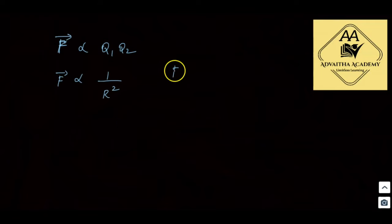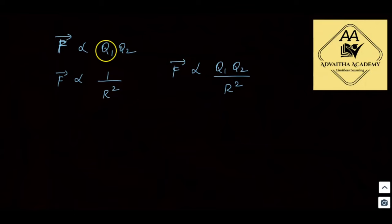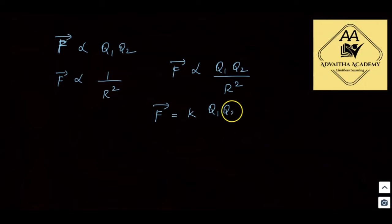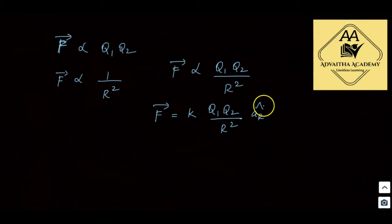Combining both proportionality statements gives F ∝ q1·q2 / r². Introducing the proportionality constant k, the force formula becomes: F-bar = k · q1·q2 / r² · r-cap newtons. Here r-cap is the unit vector in the direction of the line joining the charges, and force is a vector quantity.